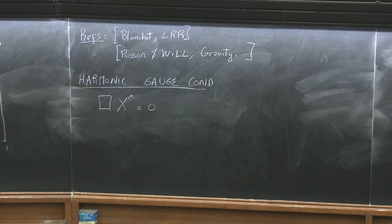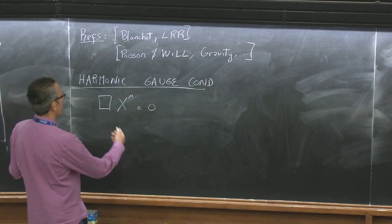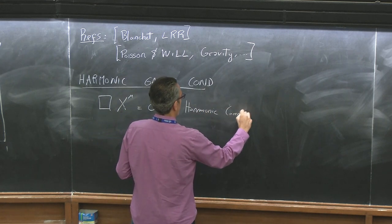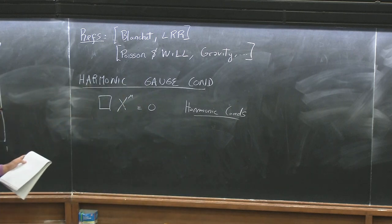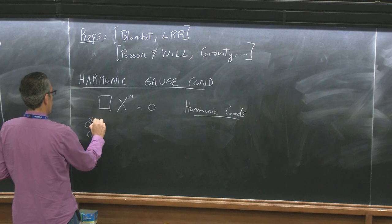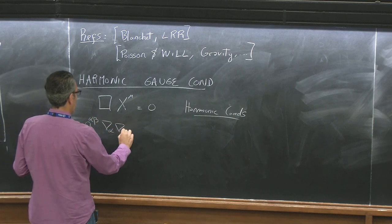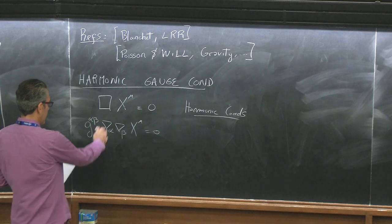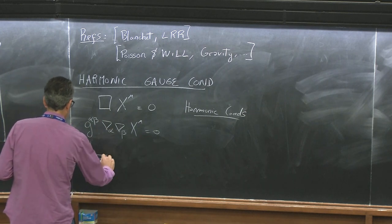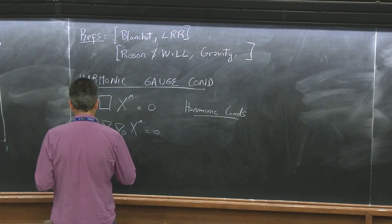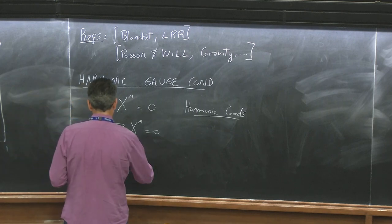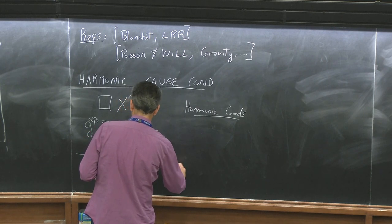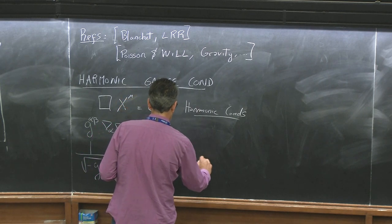Piotr told us that harmonic coordinates are coordinates that satisfy this equation: the box operator in the metric, contracted twice with a covariant derivative acting on your coordinates. Because this is a complete trace on this covariance, Piotr also wrote down that this was equal to 1 over root minus g, d-alpha of root minus g, g-alpha-beta, d-beta, x-mu equal to 0.